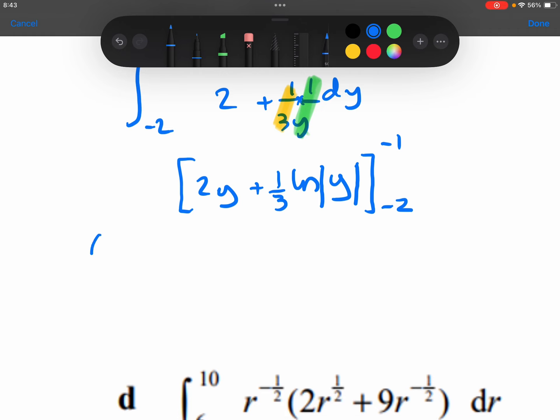Substituting the minus 1 in. Now, substituting the minus 2 in. Right, the 2 times the minus 1 is minus 2. The modulus of minus 1 is just 1, and then ln 1 is just 0. So a half of 0 is 0. 2 times minus 2 is minus 4. ln of the modulus of minus 2 is plus 2. So we get 1 third ln 2.